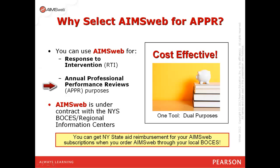Additionally, because AIMSweb tracks student growth so well and we have new student growth norms available, you can also use it as part of your professional performance reviews when you need to submit student growth data. AIMSweb is under contract with the New York State BOCES and Regional Information Centers, so you can get New York State aid reimbursement for your AIMSweb subscriptions when you order through your local BOCES.